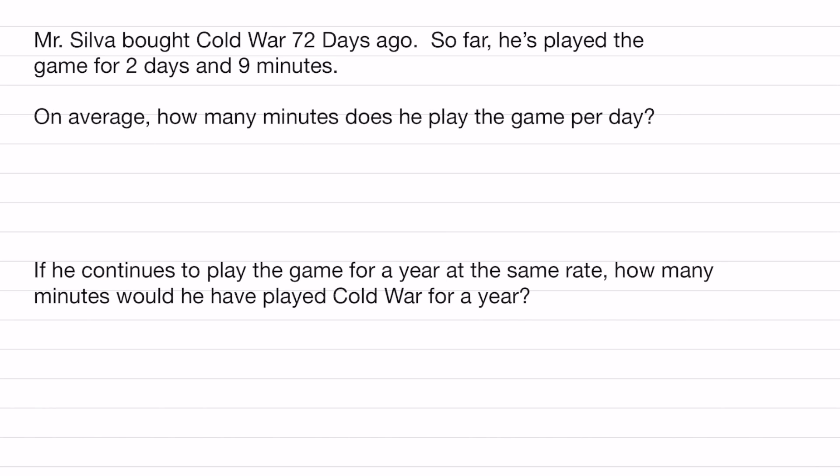If I play the game for 2 days and 9 minutes, and it took me 72 days to do that, we first have to convert this 2 days all into minutes. That way we're dealing with a single unit. So that's really easy to do. 2 days, all you got to do is times it by 24 first because there's 24 hours in a day and then times it by 60 because there's 60 minutes in a single hour. And I will get 2,880 minutes. Don't forget that there's this extra 9 minutes. So I have to add 9 more minutes and I will get 2,889 minutes.